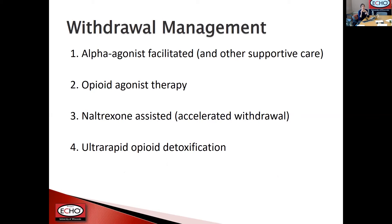When it comes to treating withdrawal, the most fundamental concept is helping someone not feel like they're suffering, because withdrawal discomfort is one of the biggest triggers for people to use again. To help someone stay in treatment — whether that means not leaving against medical advice or sticking with outpatient treatment — you want to make sure someone can tolerate what they're experiencing. The four buckets are: supportive care agents like alpha agonists, directly treating withdrawal with an opioid agonist, and then naltrexone-assisted or ultra-rapid approaches to speed it up.